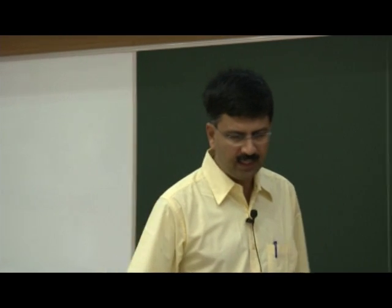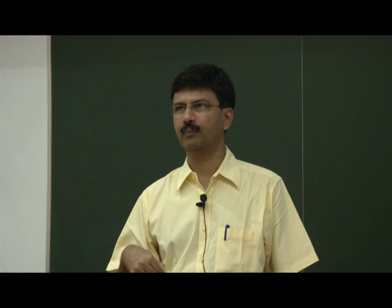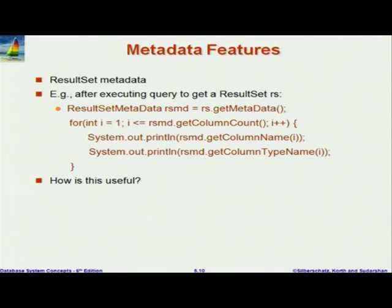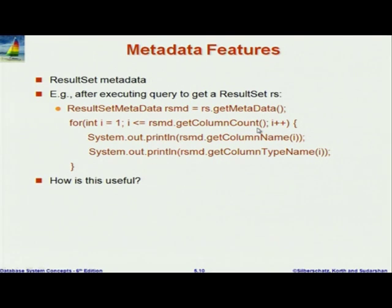JDBC lets you access metadata through a fairly simple interface. There are two kinds of metadata. The first is when you have executed a query and you want metadata about the query result - what are the attributes in the result set, and so forth. When you execute a query, you get back a result set. On that result set, you can call `getMetaData()`, which returns an object of type ResultSetMetaData. On that object, you can call `getColumnCount()` to get the number of columns.